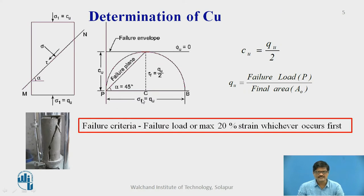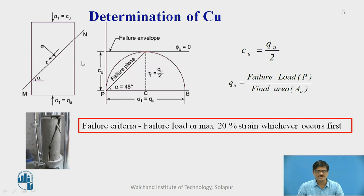This explains the determination of Cu, that is undrained cohesion, because this experiment is necessarily an undrained test. In this case, you can see a soil sample subjected to major principal stress sigma1 only, and we apply sigma1 till failure takes place. The failure will take place along one particular plane inclined at an angle alpha to the major principal plane. Since we don't have any confining pressure, sigma3 is 0, and whatever sigma1 we obtain from the experiment — that is the vertical stress — we can use it to draw the Mohr's circle.